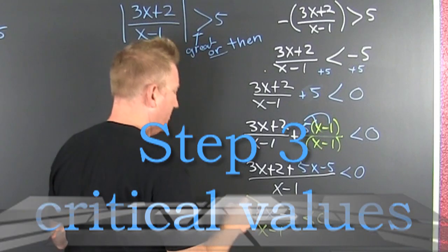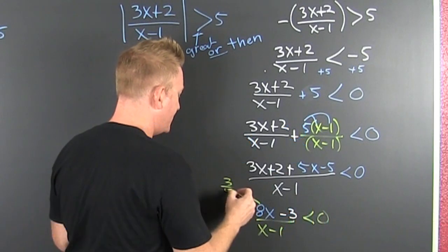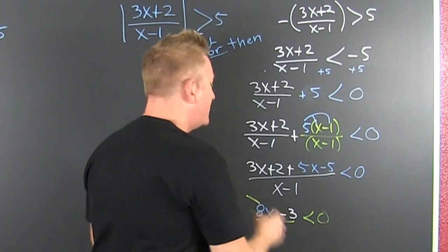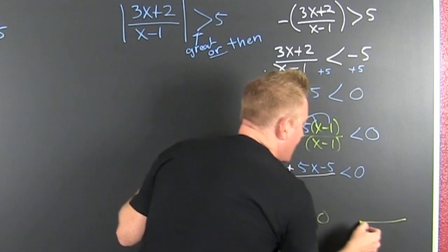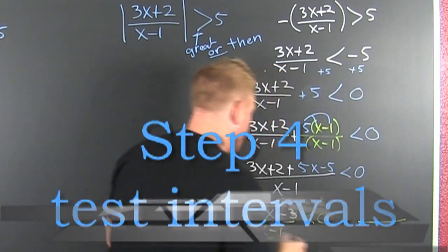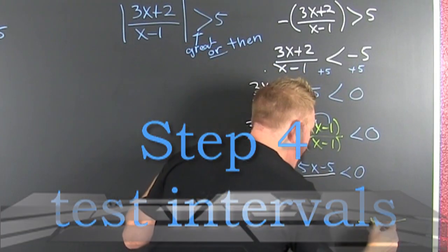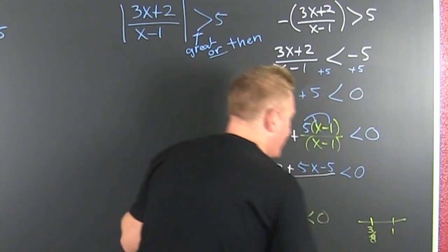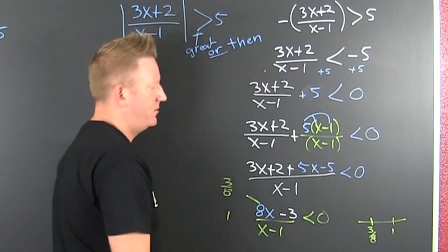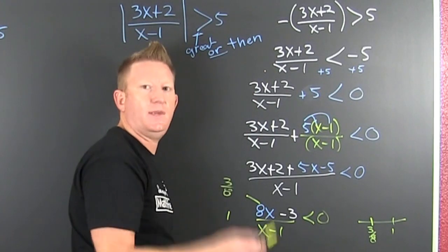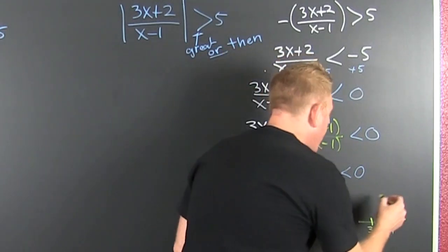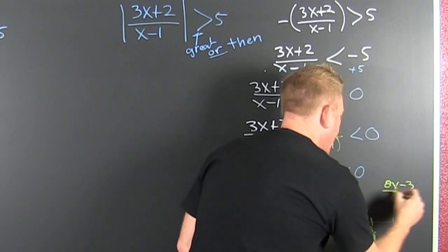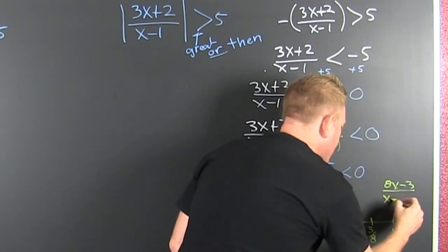What makes that numerator 0? Looks like it's 3/8 — that's a critical point. And then 1 — that's a critical point. So those are the spots I need to look at. We're checking those in the fully factored form of (8x - 3) and (x - 1).